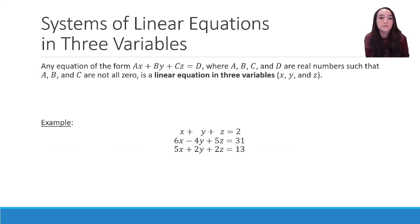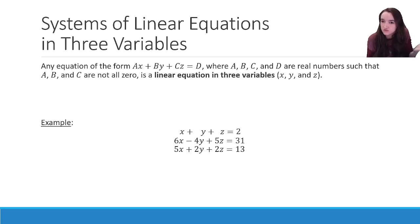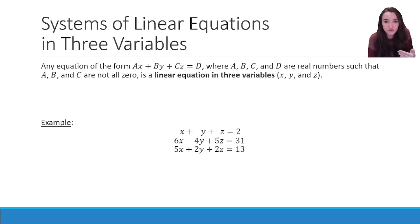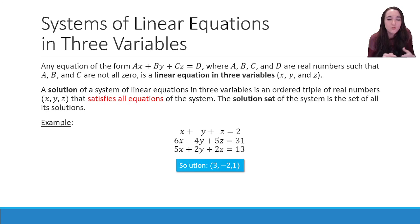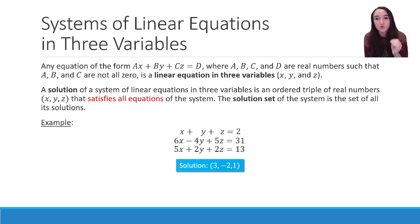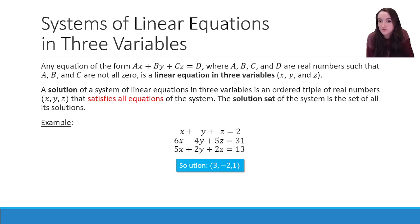Any equation of the form ax plus by plus cz equals d, where a, b, c, and d are all real numbers that are not all zero, is a linear equation in three variables x, y, and z. A system of linear equations has multiple of these equations together, and our goal is to figure out when all of them can be satisfied simultaneously. A solution is an ordered triple (x, y, z) that satisfies all three equations at the same time, and the solution set is the set of all possible solutions.